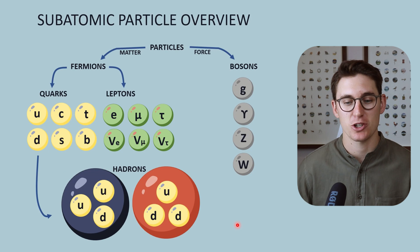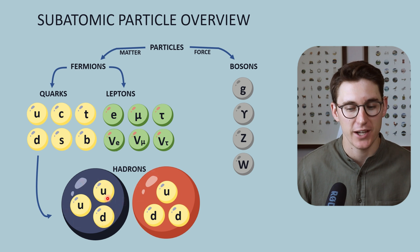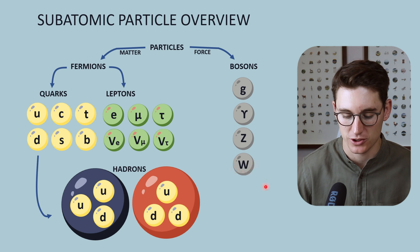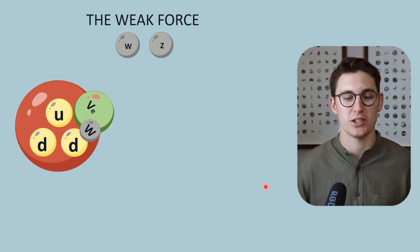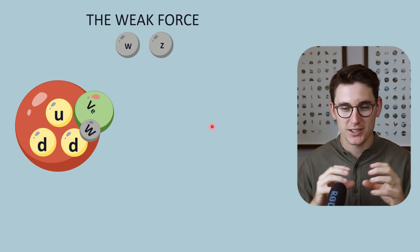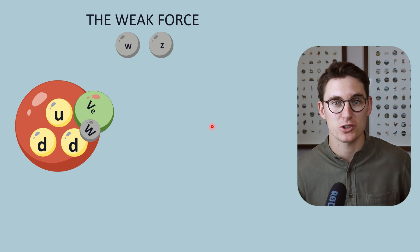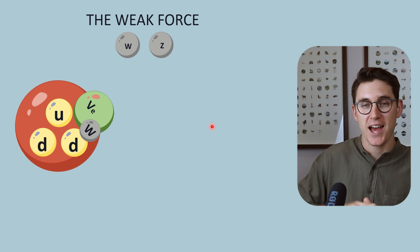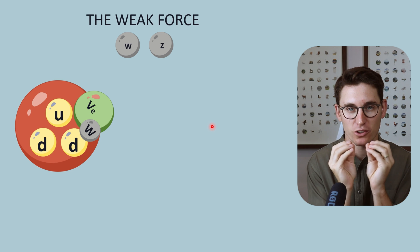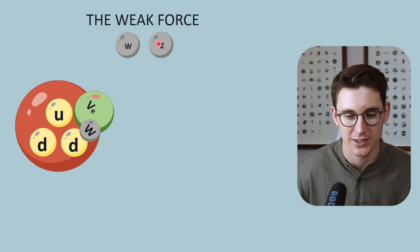We've seen the subatomic particle overview — our hadrons are here. We're changing a neutron into a proton and we're going to use the force carriers of the weak force: the W and Z bosons. Much like the strong force, the weak force only works over very small distances — at the level of atomic and subatomic particles. The electromagnetic force and gravity can work over small distances as well as over kilometers and the scale of the universe, whereas the weak and strong forces act only over very small distances.